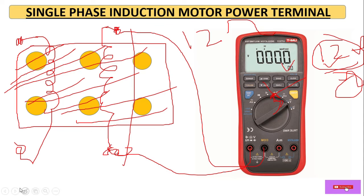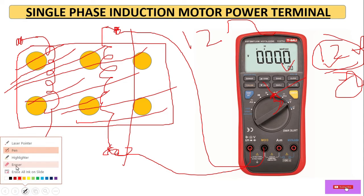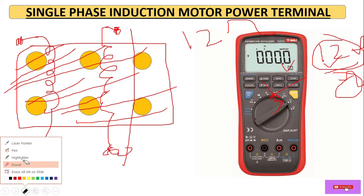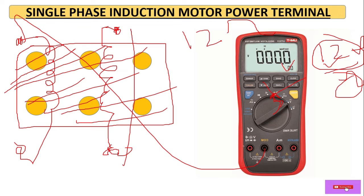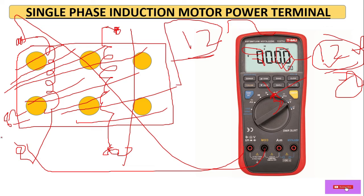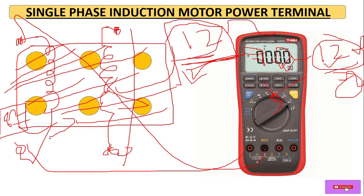Now disconnect the probe and connect it across the second winding pair. This value reads 8 ohms — so here we assume 8 ohms. As per the resistance values, we can identify which is running and starting winding. Higher resistance value is the starting winding and lower resistance value is the running winding. So the 12-ohm winding is the starting winding and the 8-ohm winding is the running winding. In this way we can identify the winding terminals of a single phase induction motor or pump.